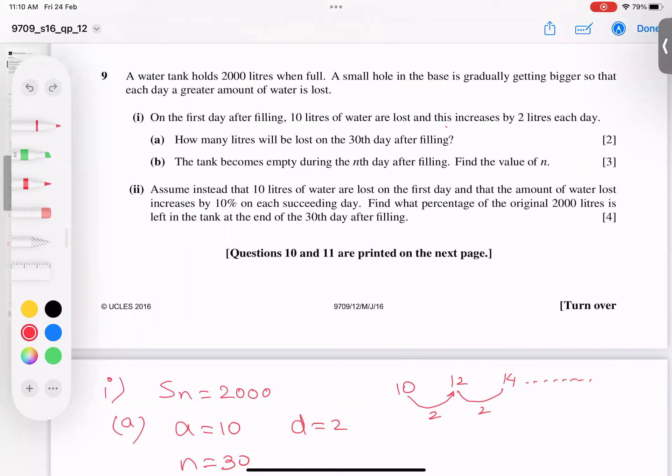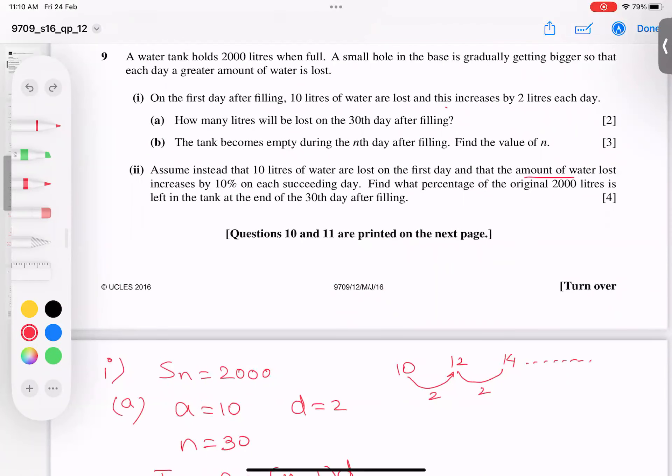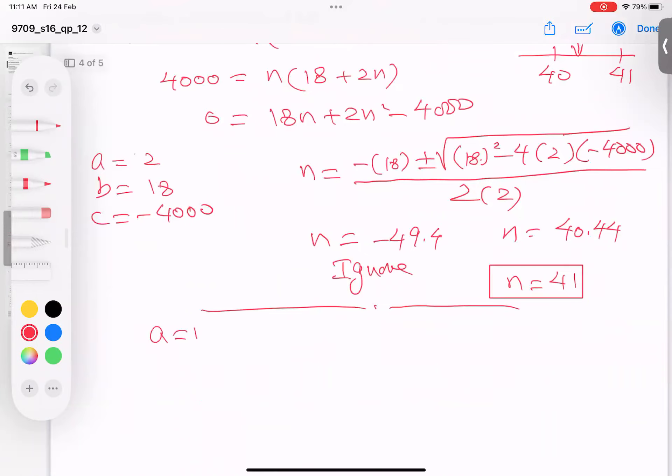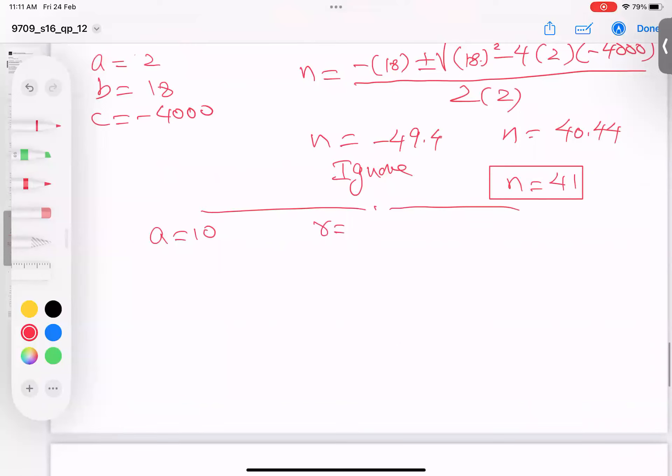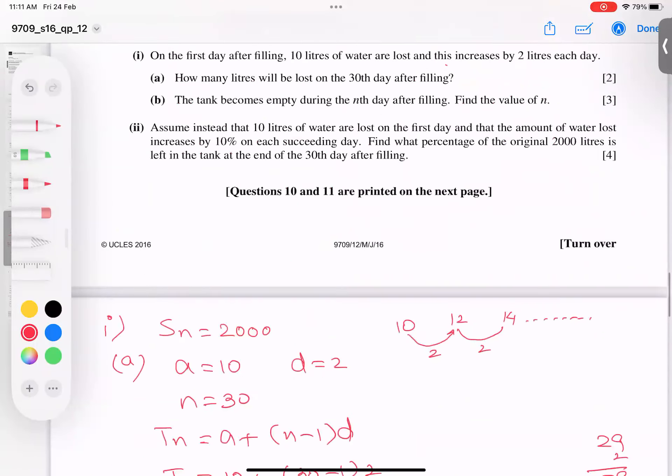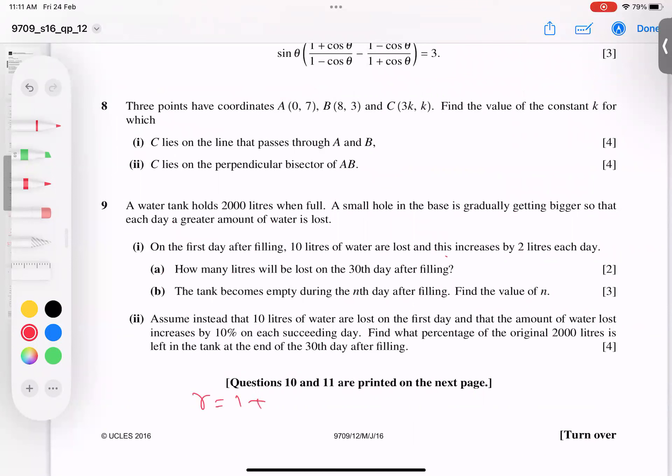Now part two. Instead of 10 liters lost on day first as a constant increase, this is GP because the amount of water loss increases by 10 percent each succeeding day. This means we have a common ratio. Let's start: a = 10, and since it's a 10% increase, r = 1 + 10/100 = 1.10. If it were decreasing, r would be 1 minus 10/100.